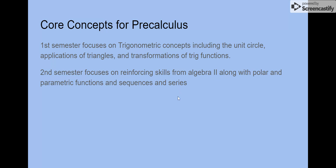Here's a high-level overview of the core concepts. In the first semester, we cover heavy trigonometric concepts — lots of triangles, unit circles, special radian values, and transformations of functions. In the second semester, we go back and focus on a lot of our algebra 2 topics, adding polar, parametric, and then sequences and series to round out the semester.